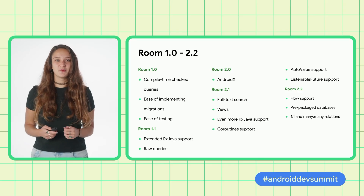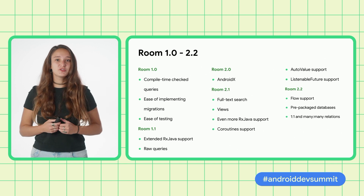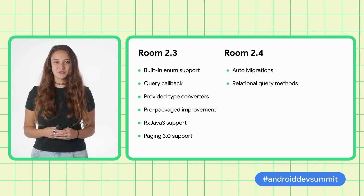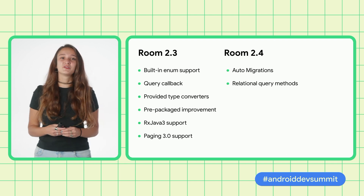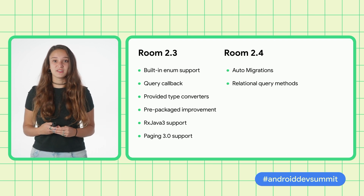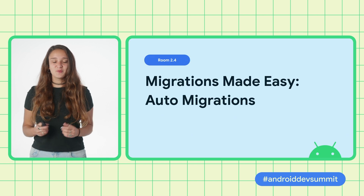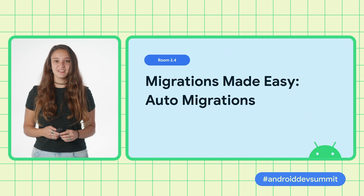The last time we talked about Room was at 2.2, at which point we were already supporting so many features. But those features weren't enough, and you still thought there was room for improvements. So here's what we've been up to since. First up, we have auto migrations, a brand new feature that's bound to make migrations easy.